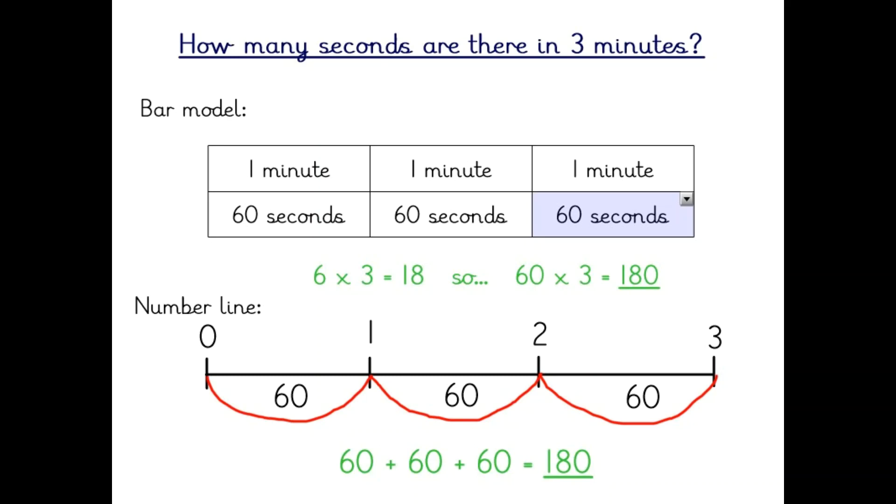So your working out should have looked something like this. I've got three minutes on the top of my bar model and each minute represents 60 seconds. So I've got three lots of 60. I could have worked out using my six times tables, knowing that three times six is 18. Or I could have done 60 times three, which is 180.